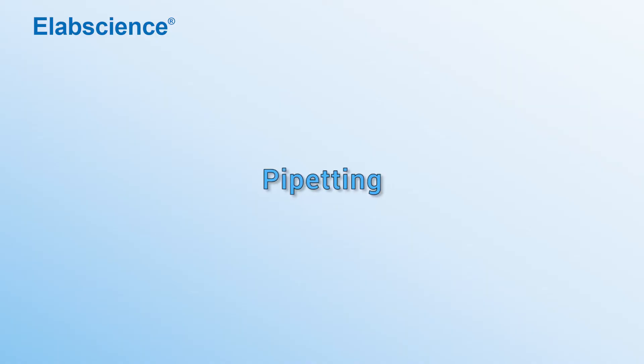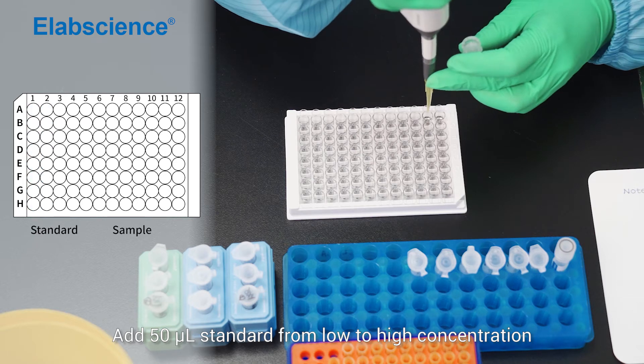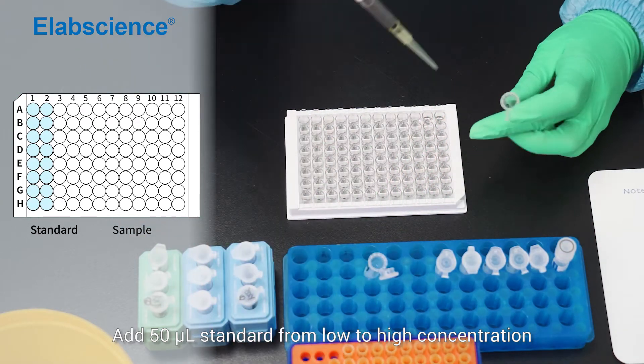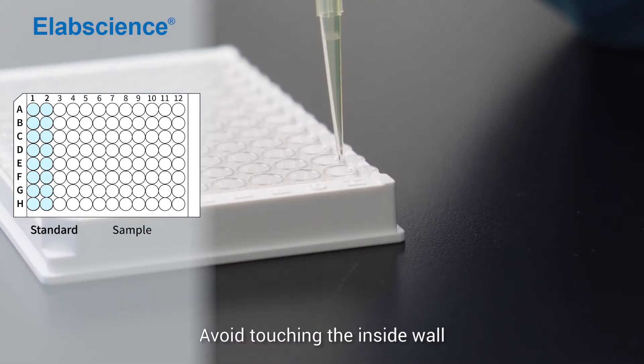Pipetting. Add 50 µL of standard from low to high concentration. Avoid touching the inside wall.